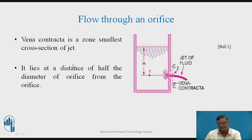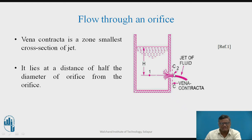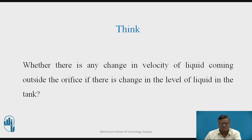Now let us first see the flow through an orifice. We have one tank, and on one of its faces — the right hand side — we have one orifice plate fitted. An orifice means there is a hole. The liquid inside the tank is going to come outside through the orifice, and we keep the head constant. Due to the sharp edge of this orifice, the loss of energy is going to occur, and the diameter of the jet will get reduced. The smallest cross-section area of the jet occurs at a zone called vena contracta, which lies at a distance of half the diameter of the orifice.